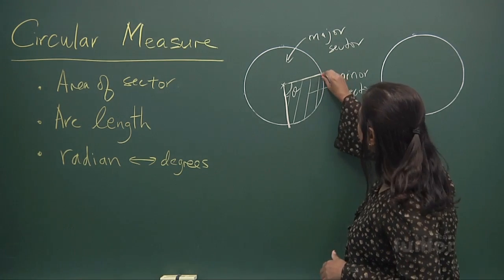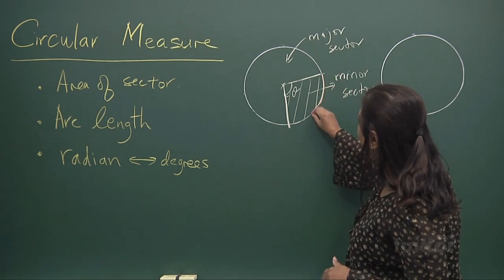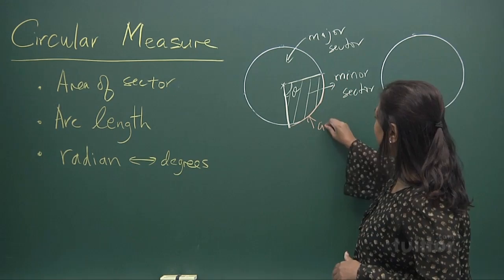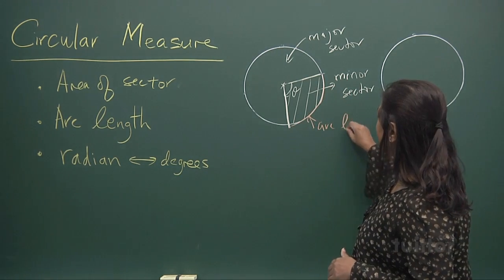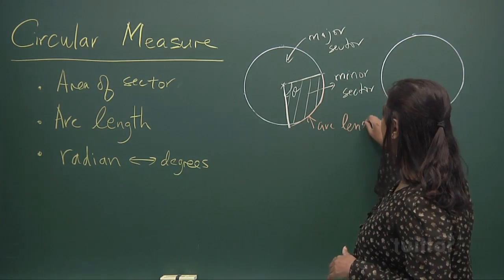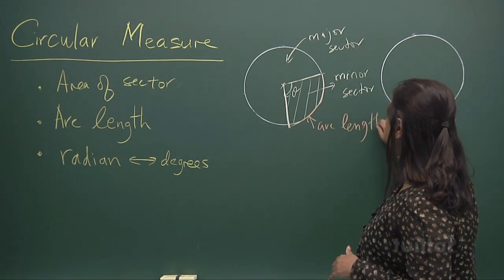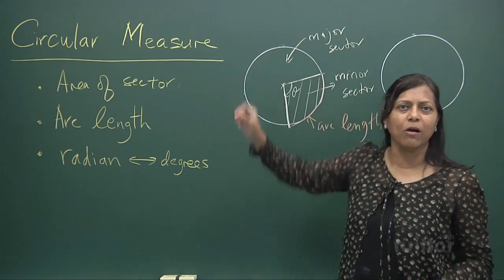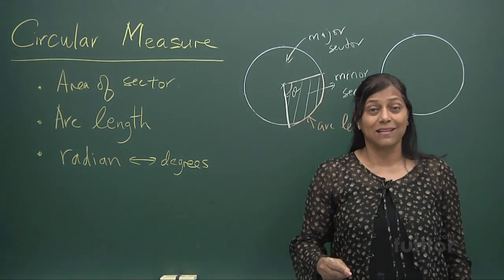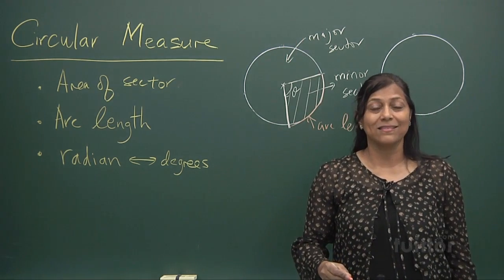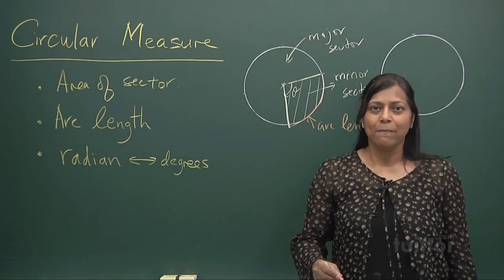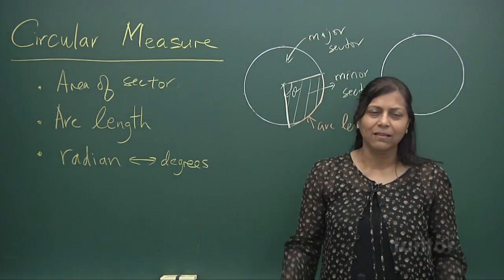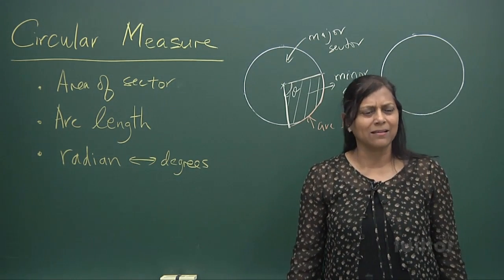What do we call this? Arc length. Now the arc length — if it's a whole circle, we call that the circumference. But when it's part of a circle, it's arc length.